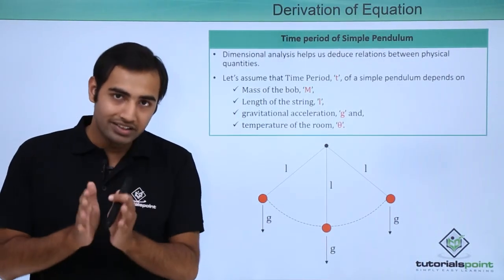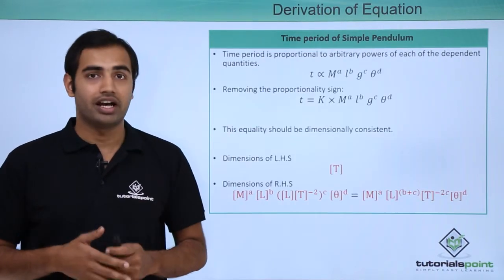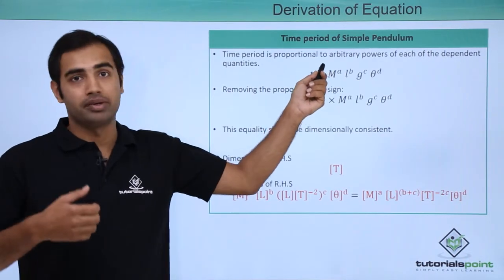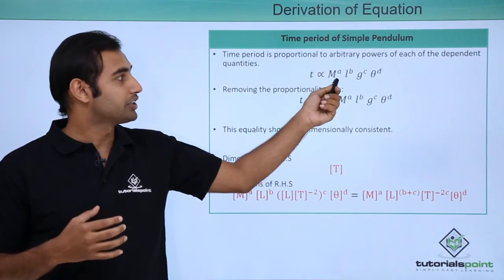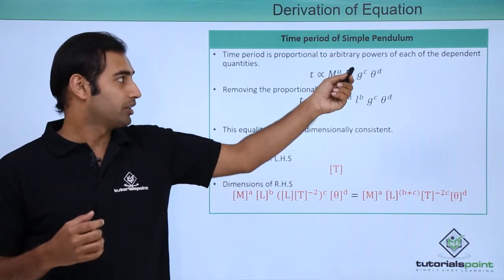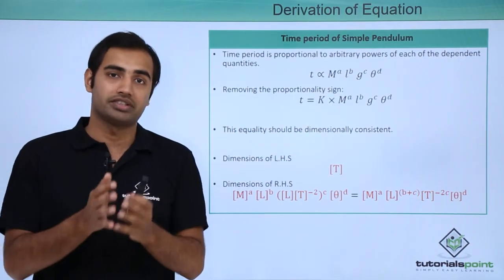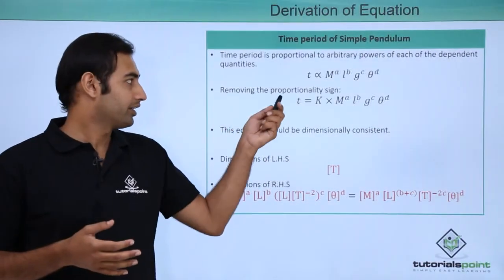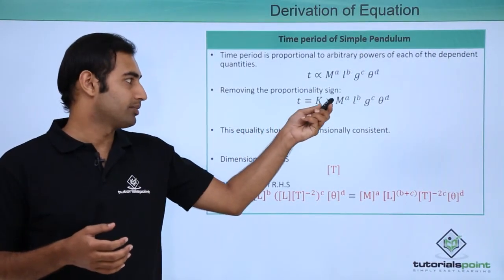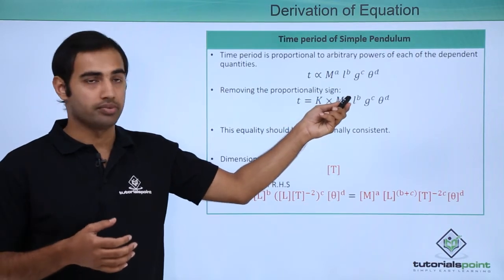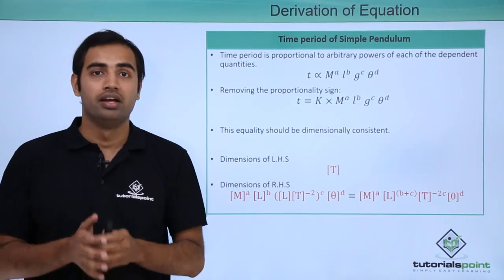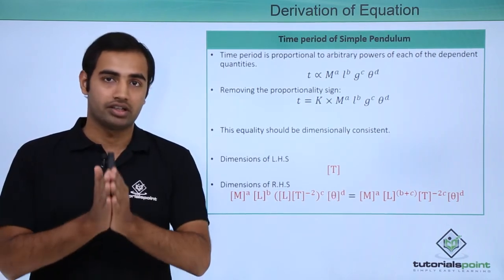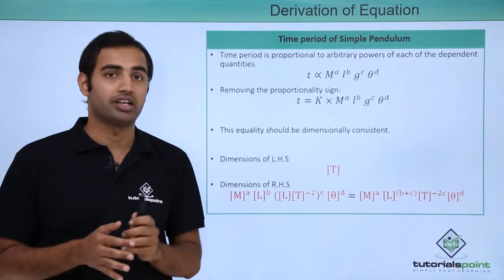Now we will write these dependencies mathematically. Time period T is proportional to m raised to an arbitrary power a, l raised to an arbitrary power b, g raised to an arbitrary power c, and theta which represents temperature raised to an arbitrary power d. So I can write T is equal to k times m raised to power a, l raised to power b, g raised to power c and theta raised to power d. The capital K here is the constant of proportionality that has come into picture because we have removed the sign of proportionality.